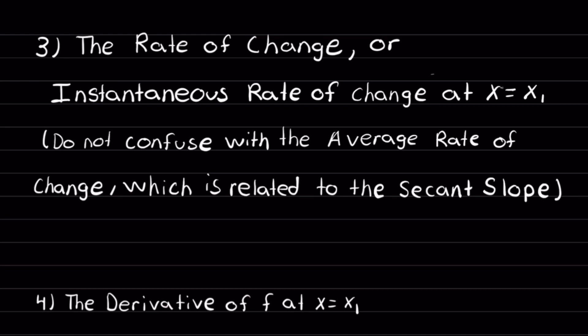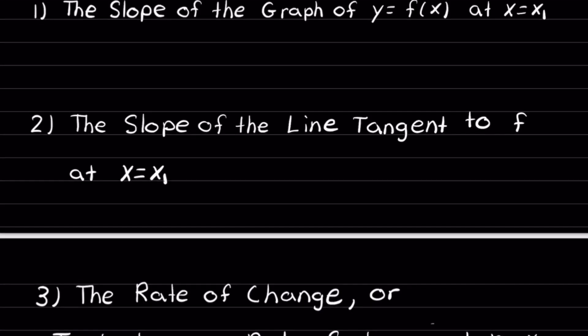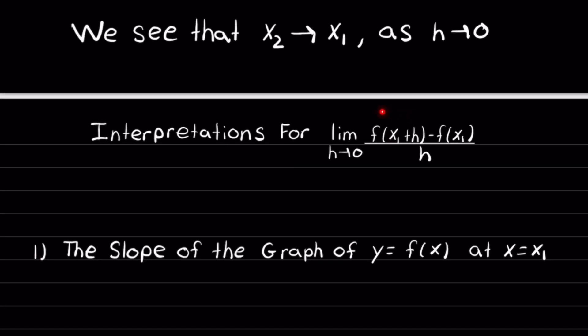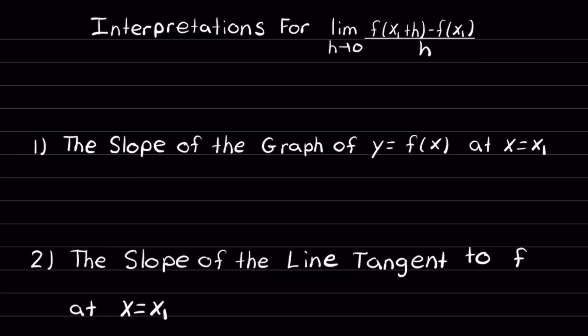Keep in mind not to confuse the instantaneous rate of change with the average rate of change. The average rate of change is associated with the secant slope, and the instantaneous rate of change is associated with the tangent slope. Last but not least, you may also have a question that asks you to find the derivative of f at x equal x1. In all cases, you can use the definition of the derivative — they all mean the same thing.